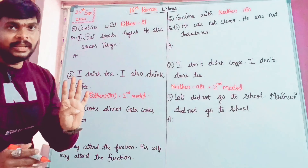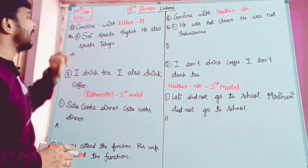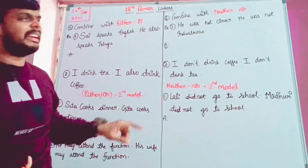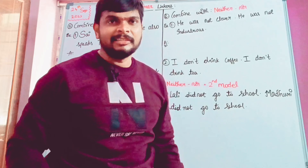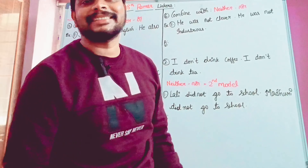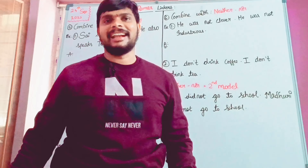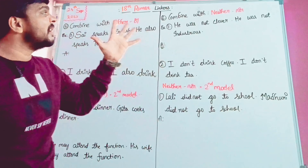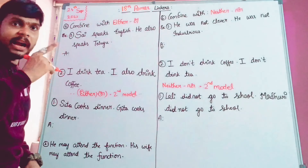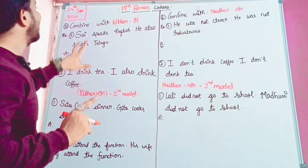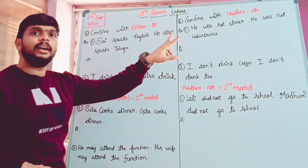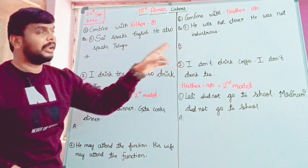Let's talk about four blanks. Fifty blanks — very important. Either or, neither nor. Correlative conjunctions are under this topic. Very, very important. We have a lot of questions. Either or, neither nor — so, very important.